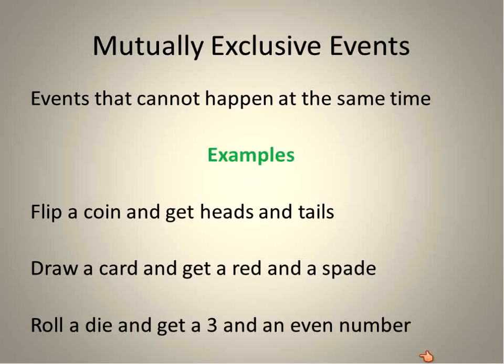Here are some examples using those probability things that we talked about earlier. Flipping a coin and getting heads and tails. Drawing a card from a deck, getting a red and a spade. You can't do that at the same time. Rolling a die, getting a three and an even number. You can't do that at the same time. So here are three examples of things that you can't do at the same time.